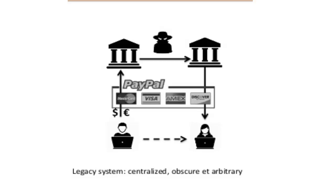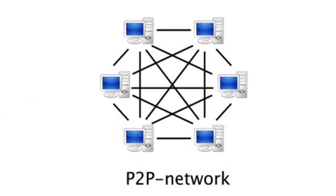In a decentralized ledger, there is no single trusted third party. Instead, a large number of nodes or peers come to a consensus on each transaction that takes place. This is the key technology of Bitcoin.